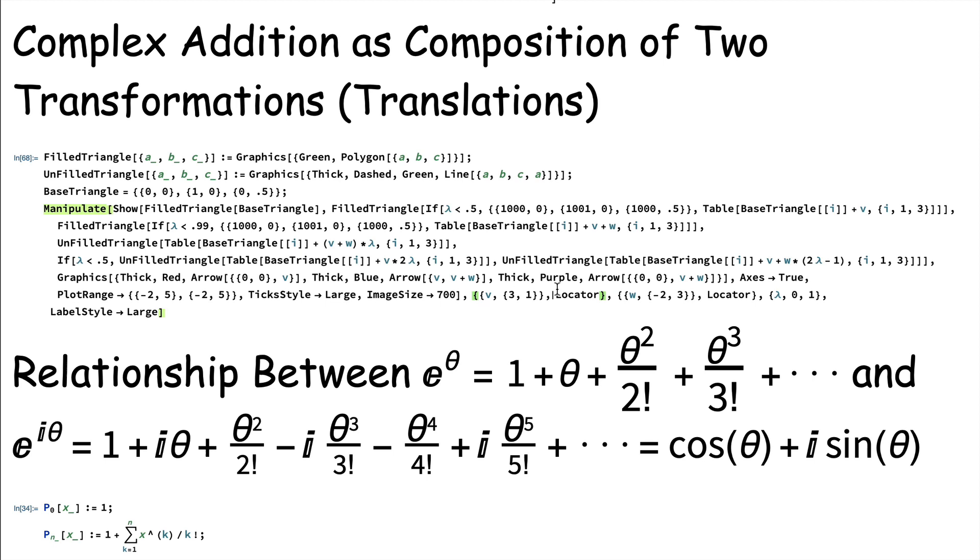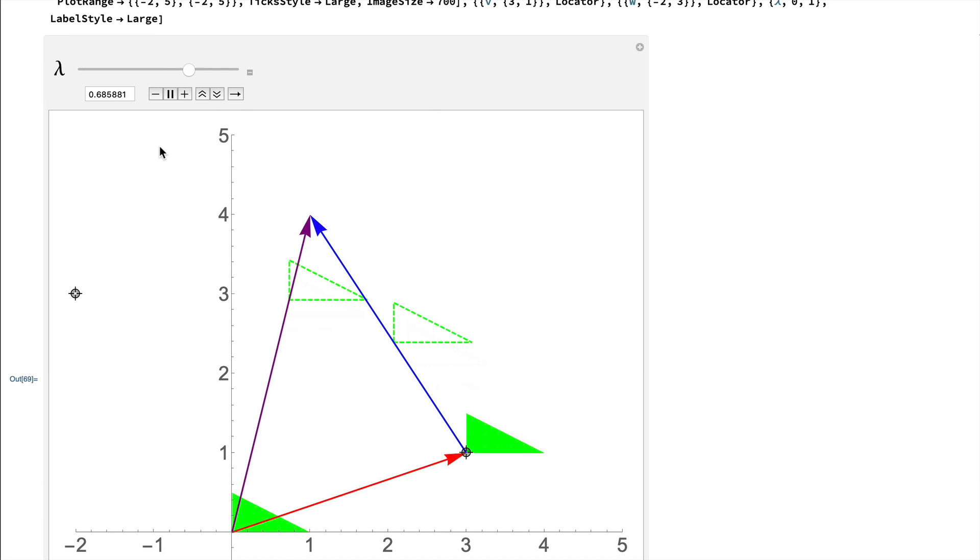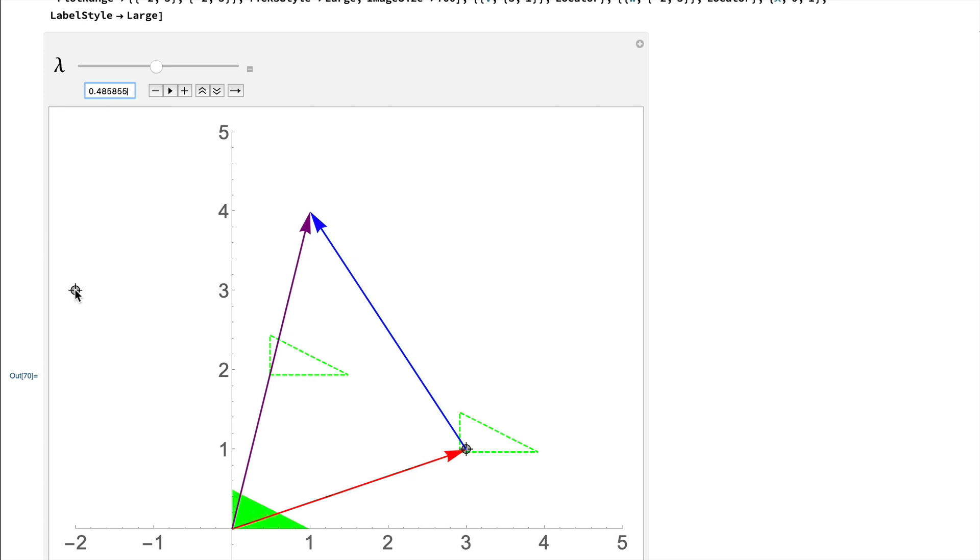I can let this parameter lambda increase, and I see that the red and blue arrows add up to the purple arrow, and I can think of those as translations. I can also move these arrows around to be in other spots, and once again think about addition in terms of translations.